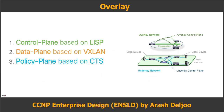The overlay network is a logical network built on top of the underlay in order to create virtualized networks. These virtualized networks are created in the SD Access fabric by encapsulating user traffic in the overlay network using IP packets on the boundary edge switches. The SD Access fabric overlay has three main components: fabric control plane, fabric data plane, and fabric policy plane.